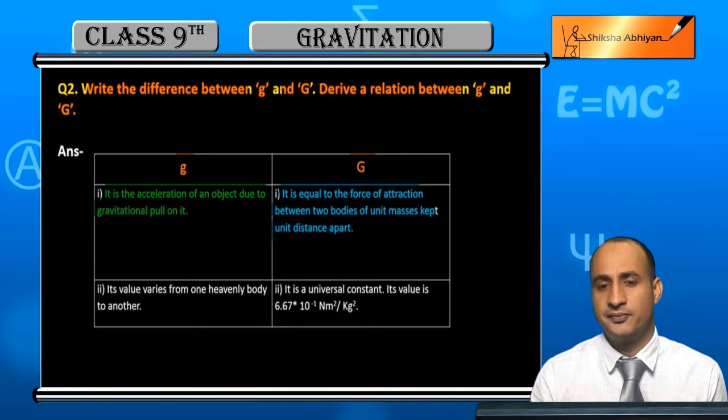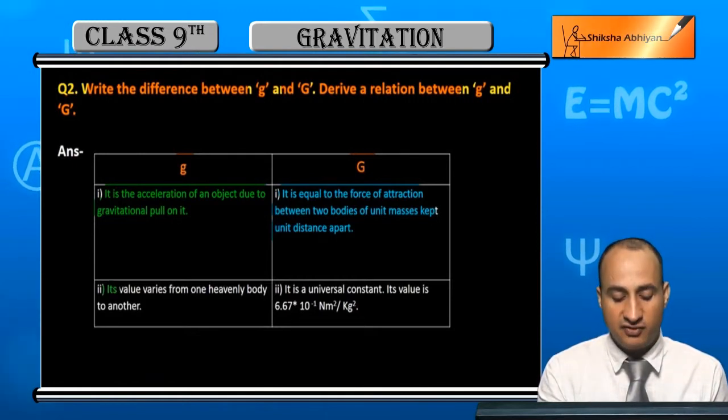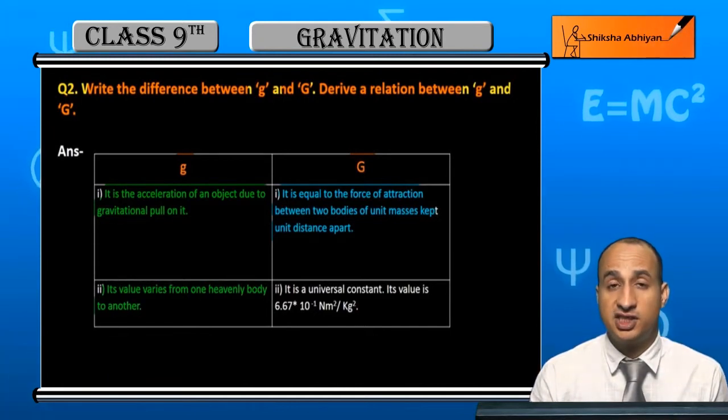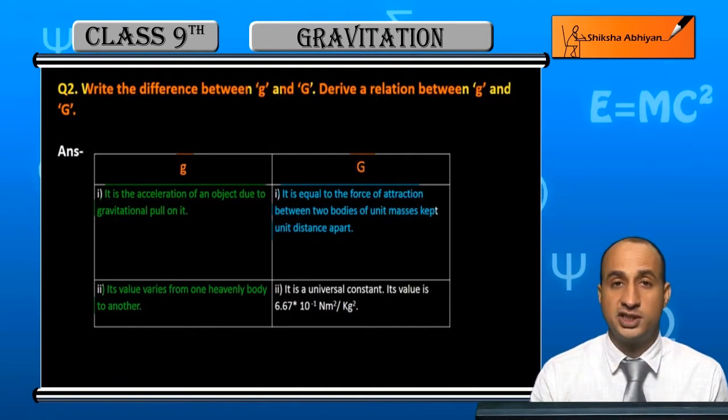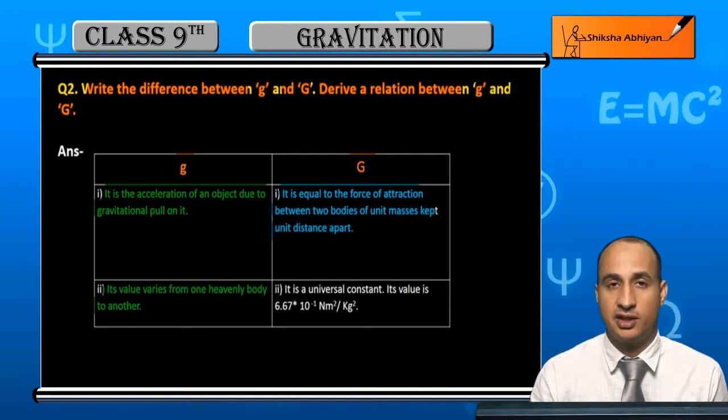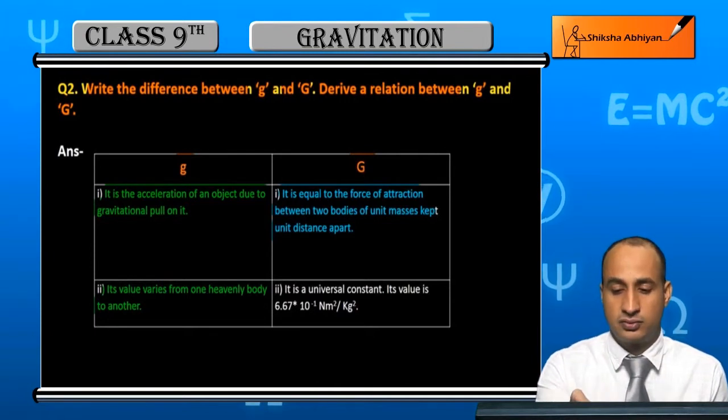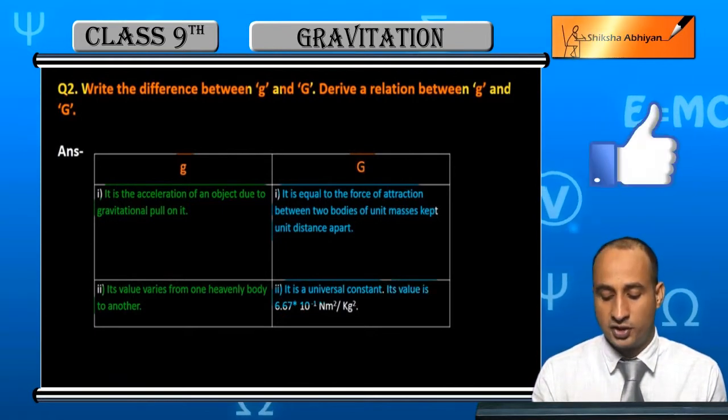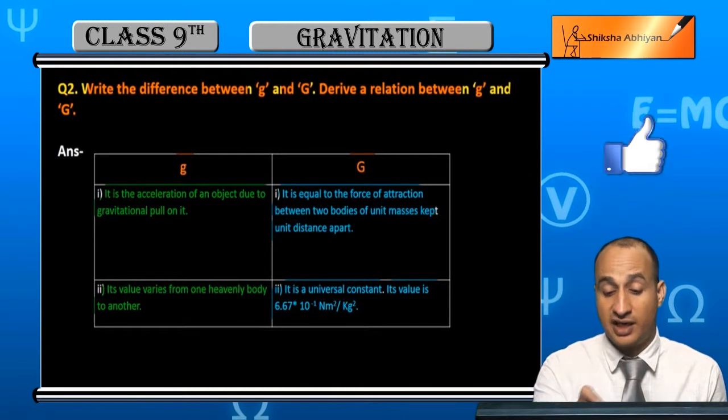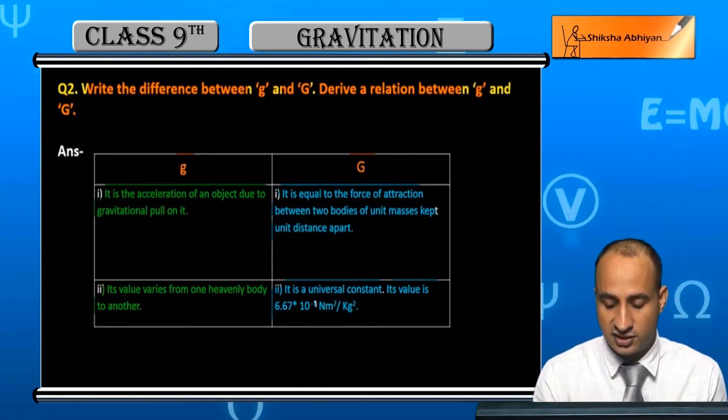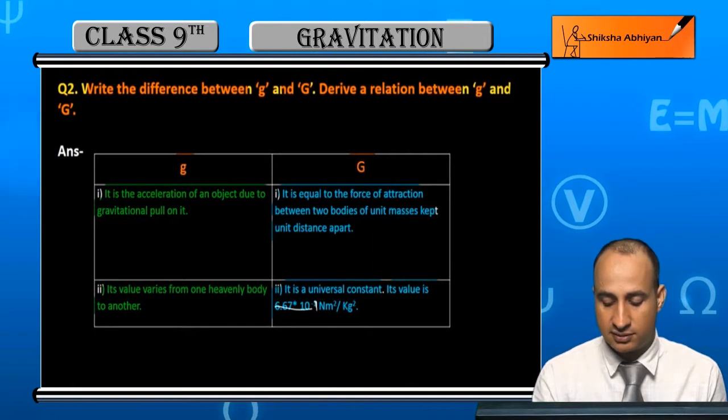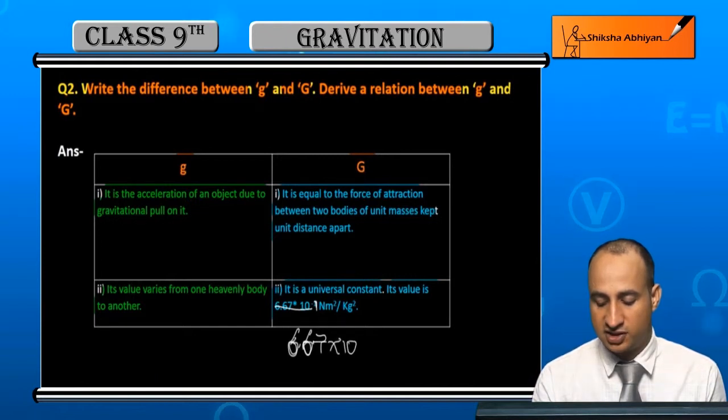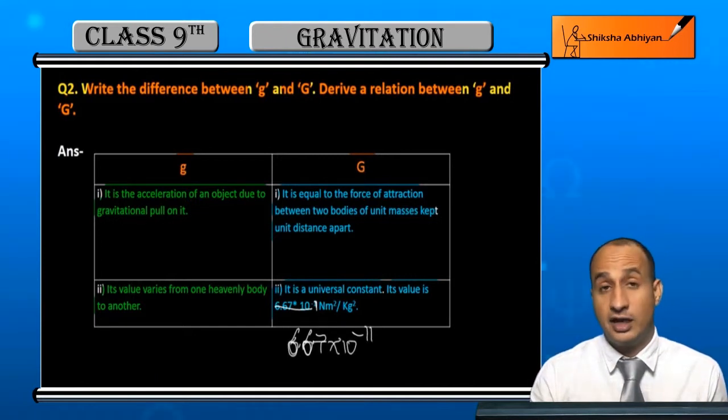Its value varies from one heavenly body to another. It is a universal constant. Its value is 6.67 × 10⁻¹¹. This is the gravitational constant value in the universe. This value does not change. I correct this students, it's 10⁻¹¹.